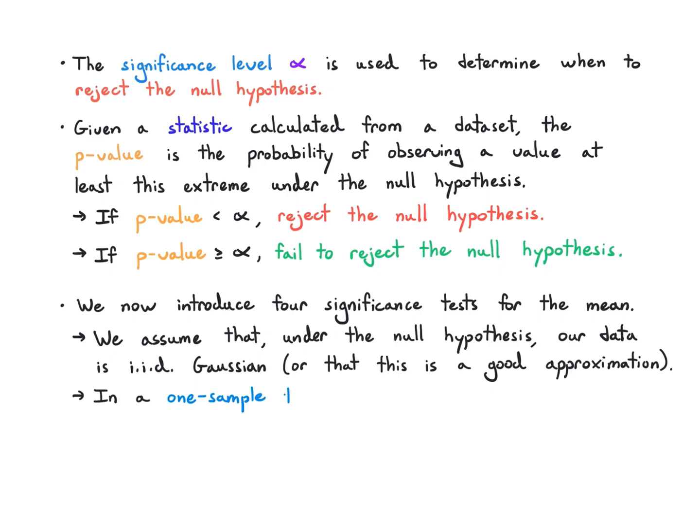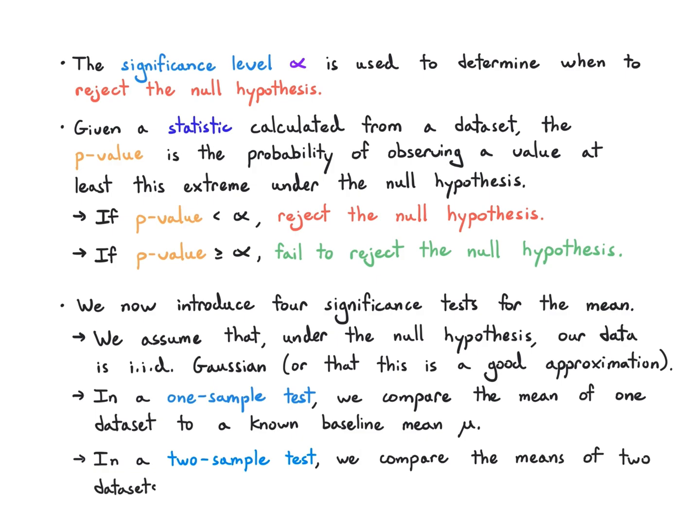In a one-sample test, we have a dataset and we're comparing its mean, its sample mean really, to a known baseline mean mu. In a two-sample test, we have two datasets and we are comparing their means to each other. You can think of a control group and a test group, and we don't really need to know the means in advance.